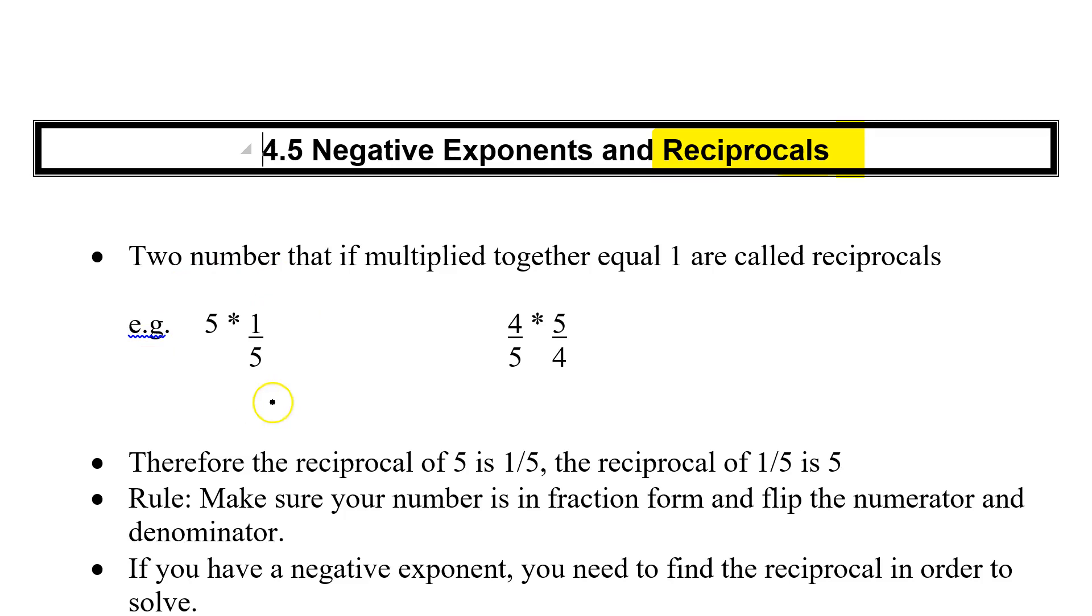We have some examples here. 5 times 1 fifth. Well, if we're going to multiply these together, we would say this is really 5 over 1. And then if we were multiplying fractions, we go 5 times 1 to be 5. 5 over 5 times 1 is 5. And 5 over 5 is 1.